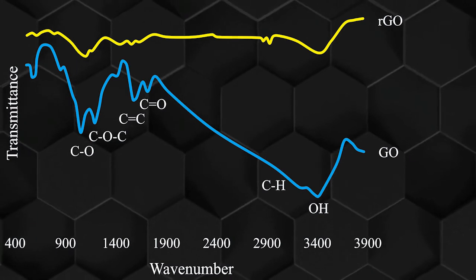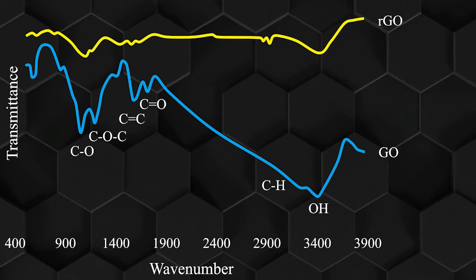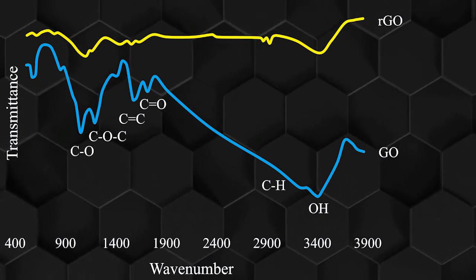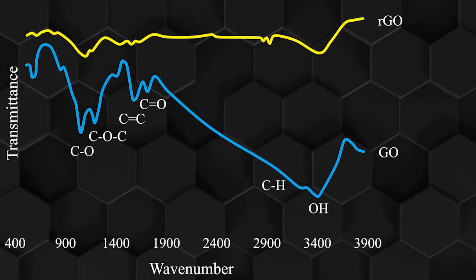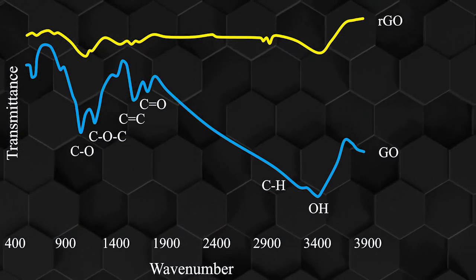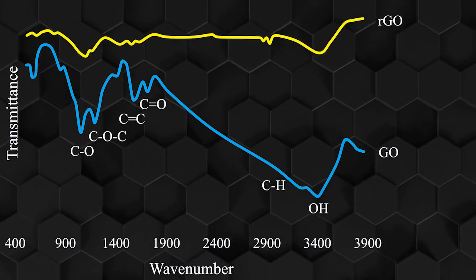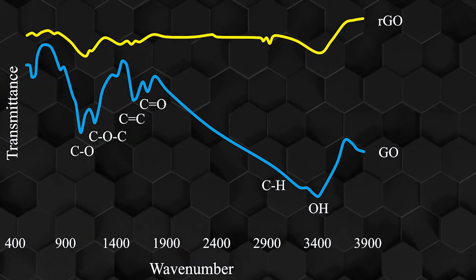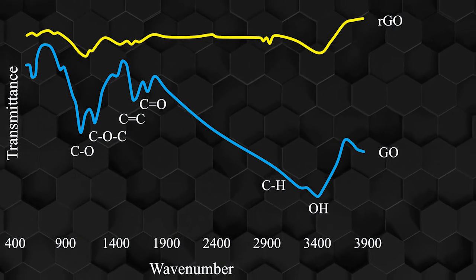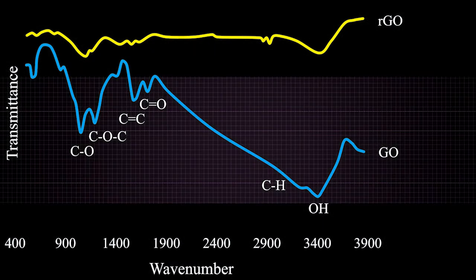The peaks at 3400 to 3500 were related to the stretching vibration of OH in graphene oxide. The peaks at 1395 and 1730 were shifted upwards, indicating reduction of graphene oxide, since these two peaks were characteristic of graphene oxide. Therefore, the peaks related to the functional groups on the graphene oxide surface had reduced and some of the peaks had completely disappeared.